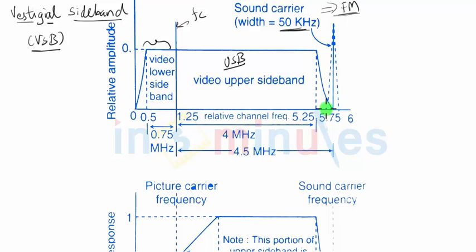So if I consider 50 kilohertz bandwidth then you can see approximately we go up to 6 megahertz if you start from 1.25 megahertz of carrier frequency point.